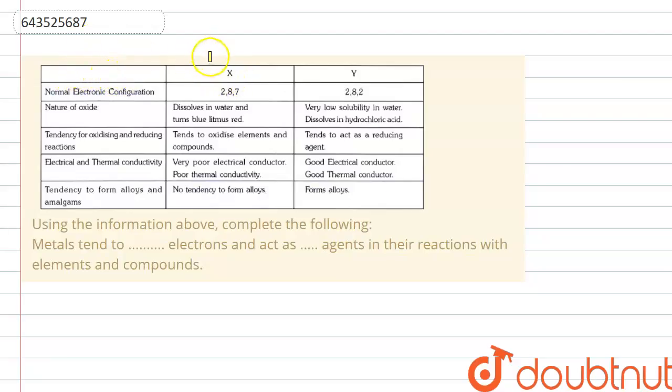First of all, let's see this information. The table given over here is given to us, and on the basis of this given information we need to answer a question. So first let's discuss these given information. Two elements are given, X and Y.